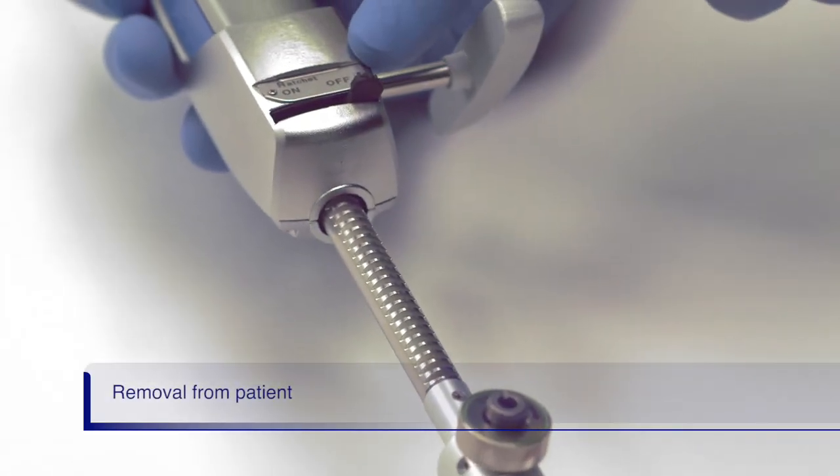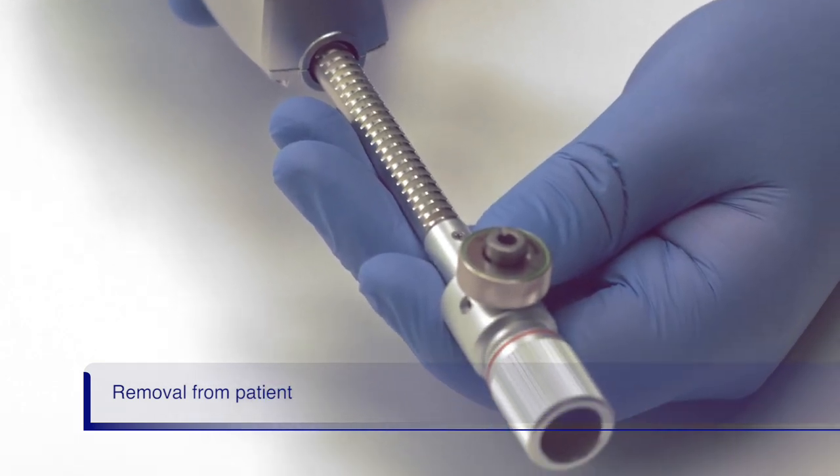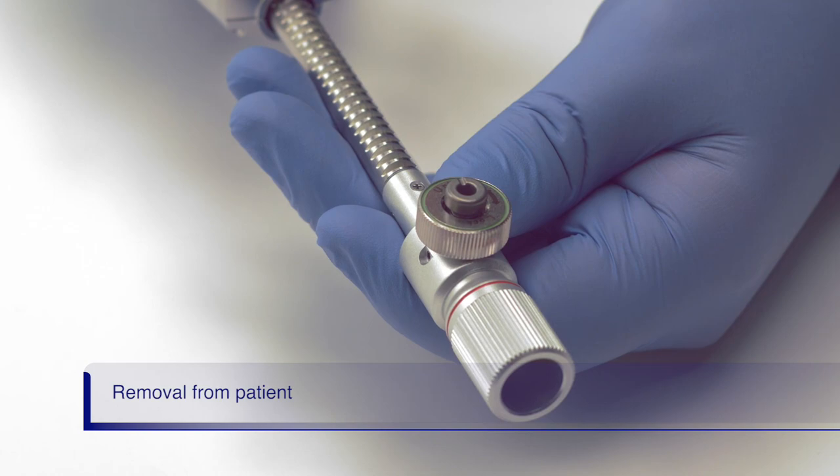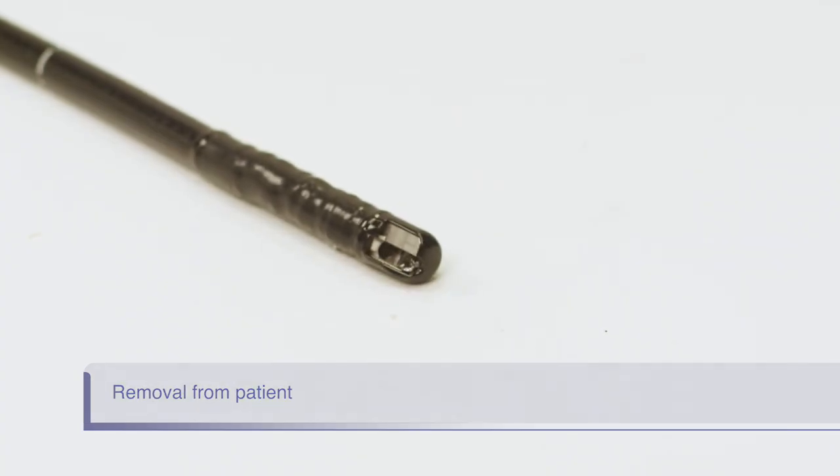When removing the basket from the patient, ensure the basket is fully closed. Also turn the ratchet off to relieve tension in the sheath. Then remove the basket from the patient.